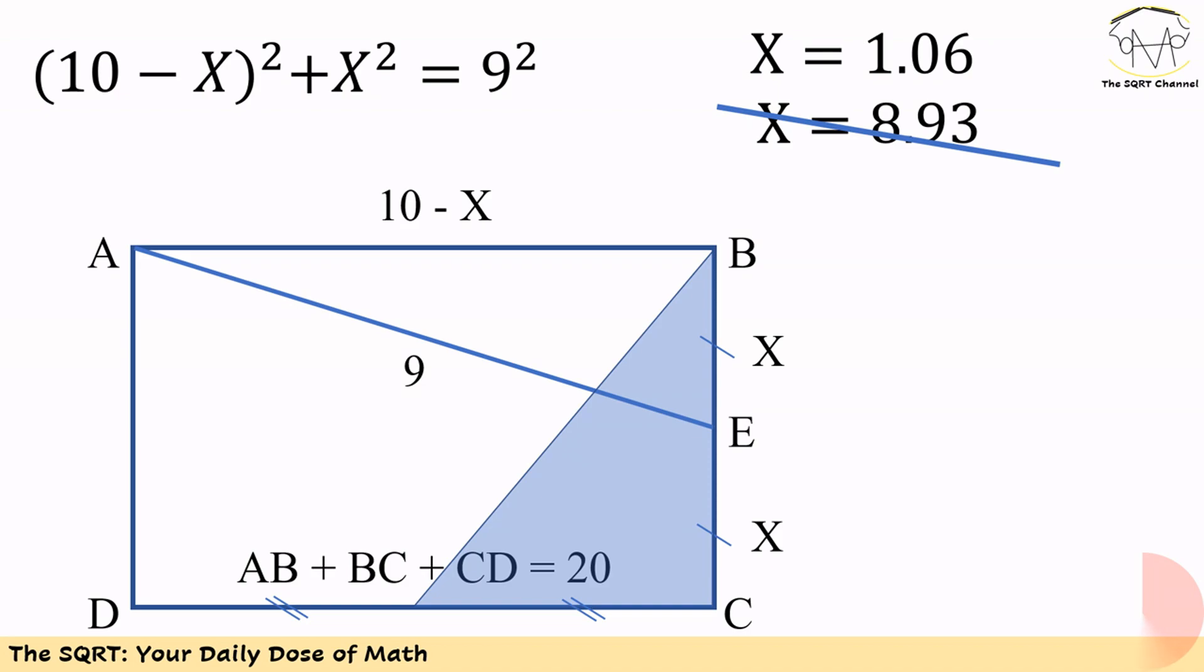If we solve this equation, we will find X as equal to 1.06. The other value is not acceptable because then AB is smaller than BC.